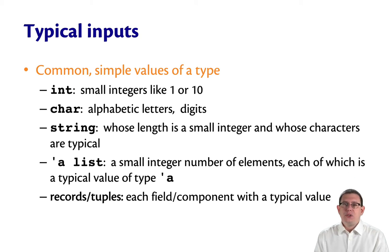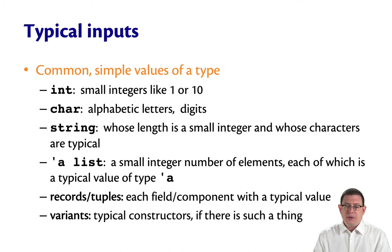For records and tuples, you get the idea here. Each field or component should have a typical value. For variants, test any typical constructors, if that makes sense for the variant that we're talking about. So all of these are common, simple values of a type that you could test if you're doing black box testing of a specification of a function.